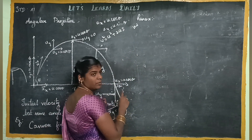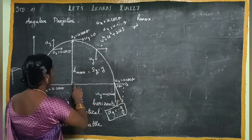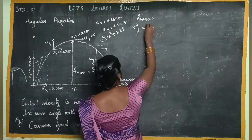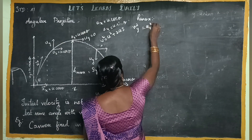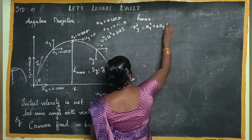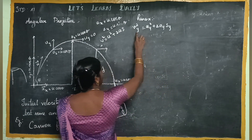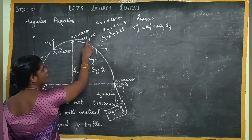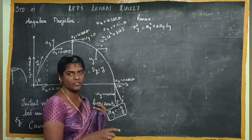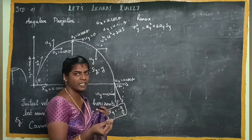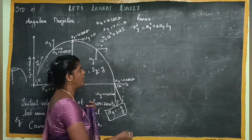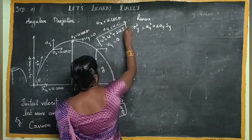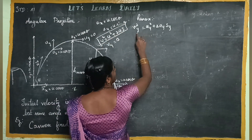So what do we need to do? We apply this to the y-axis: vy squared equals uy squared plus 2ay times sy. At maximum height, the velocity vy will be equal to 0. The displacement sy is the maximum height. So we set vy equal to 0 and solve this equation.